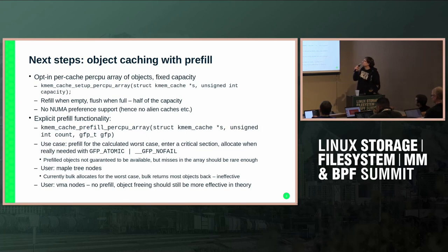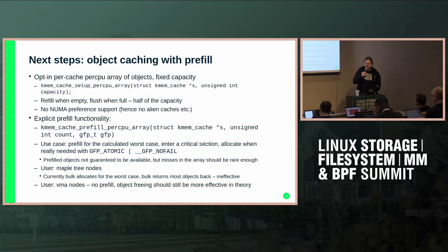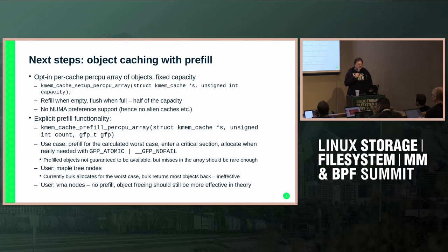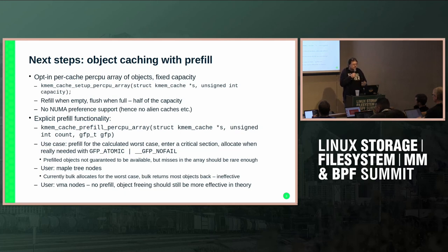For the maple tree, we are trying to add a per-CPU array of objects, which is similar to what was proposed, but it's not pre-charged to MEMCG so anyone can use them. I want to stress this is different from what SLAB had, where the per-CPU array was the main part of how it achieved performance — with per-CPU arrays and node-shared or alien arrays. This should be opt-in only for caches that would benefit. The idea is that if you free to the array, you can reuse that object more quickly than going through the full SLAB allocation, flushing when it's full and refilling when it's empty.